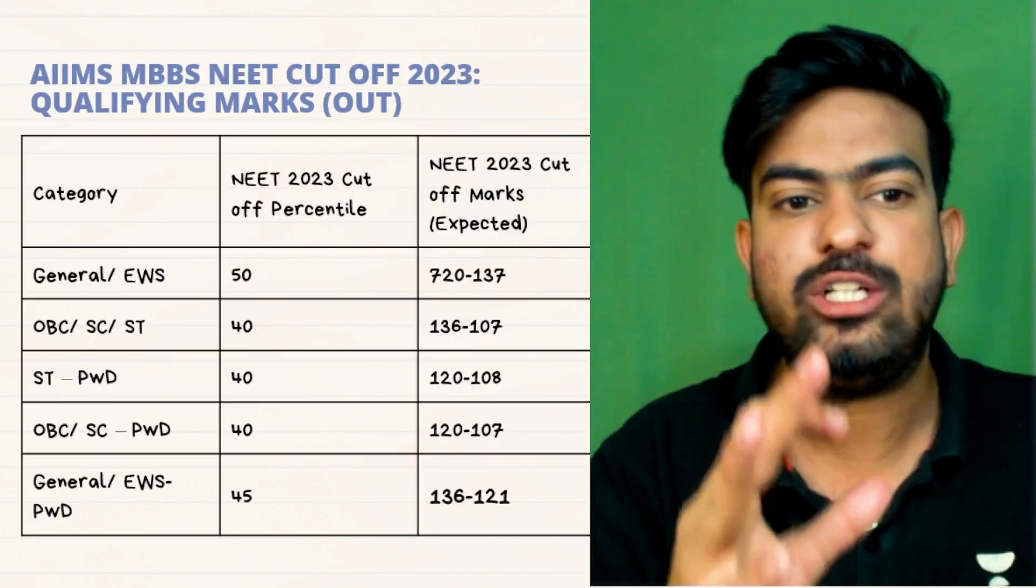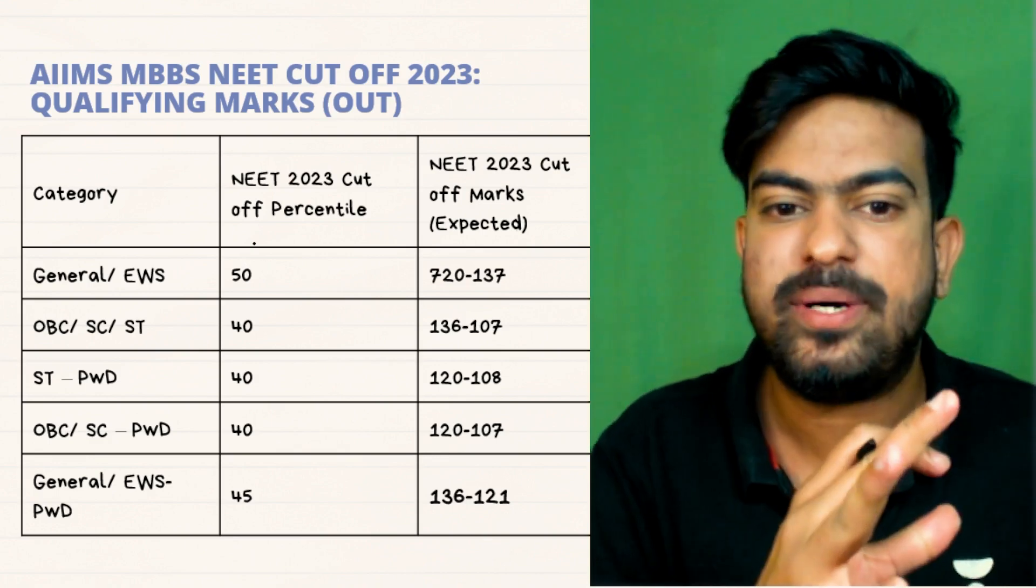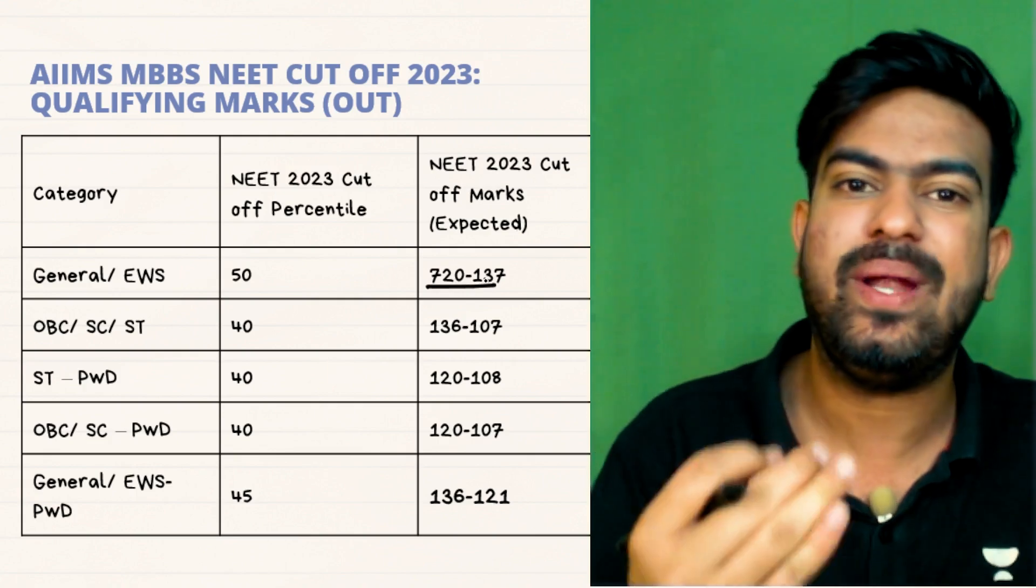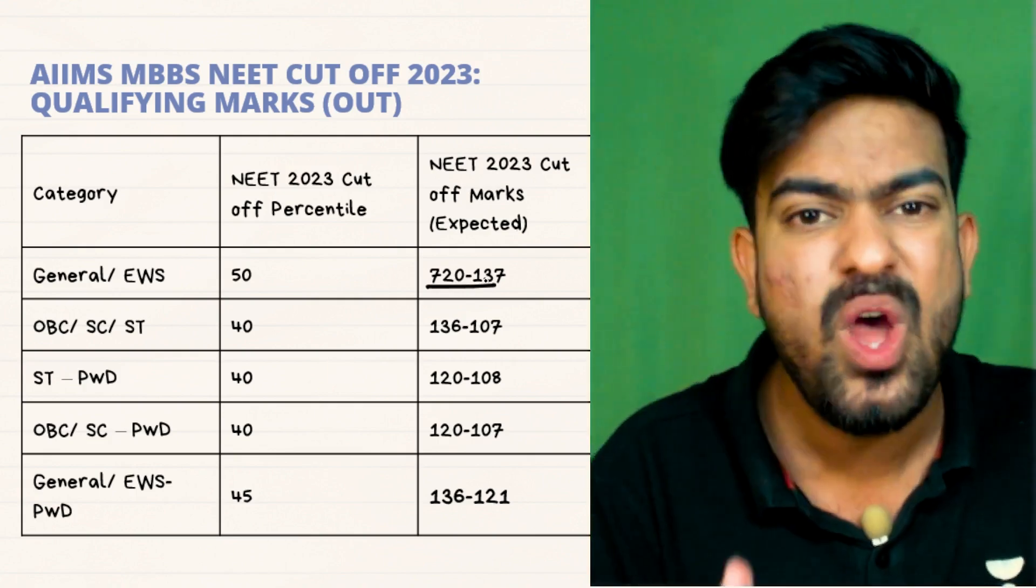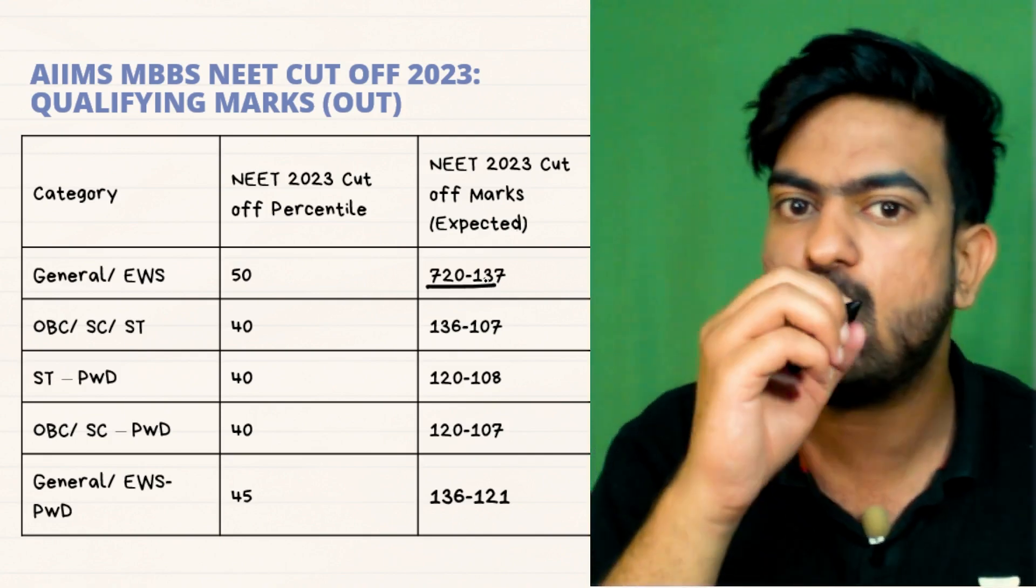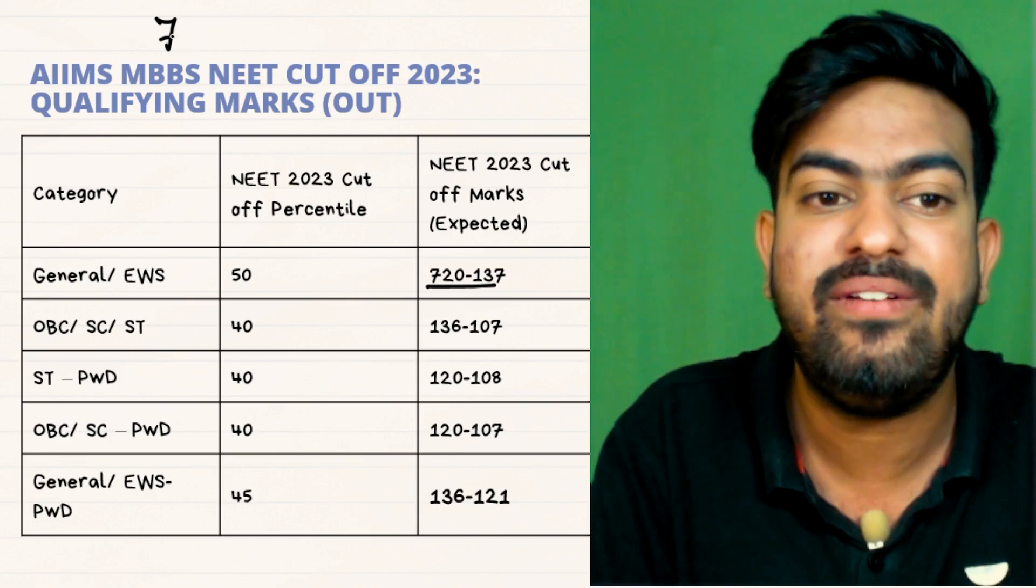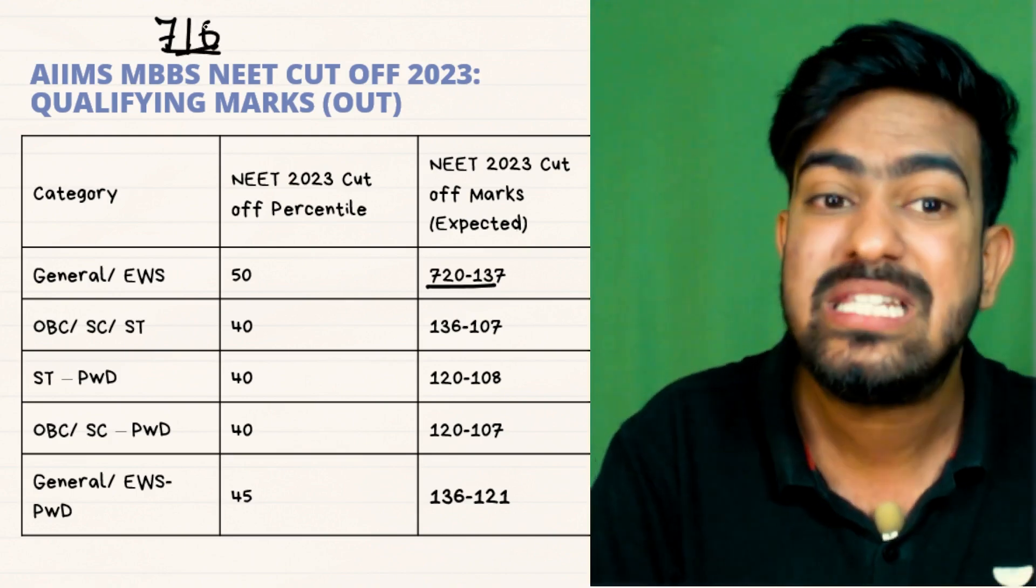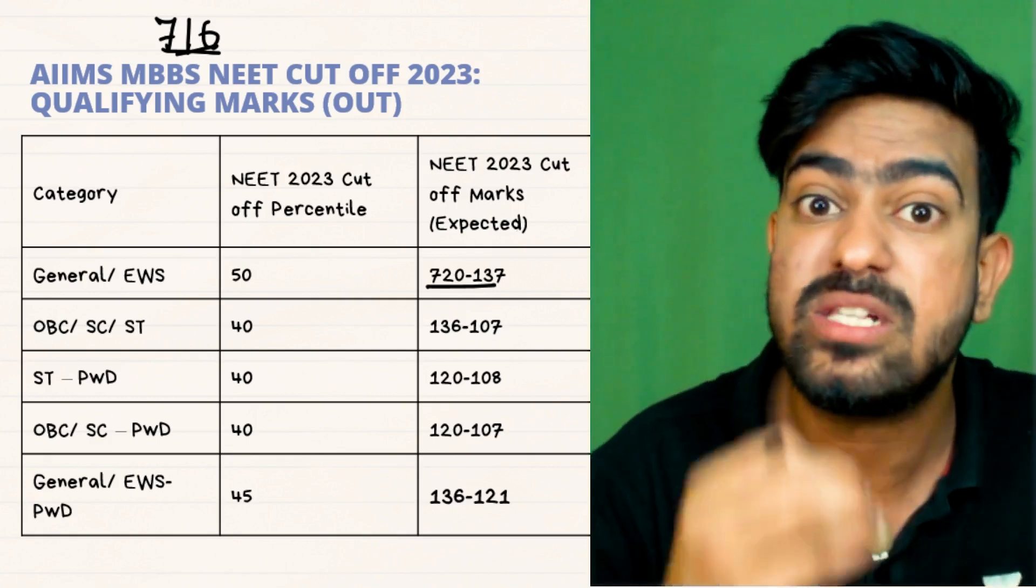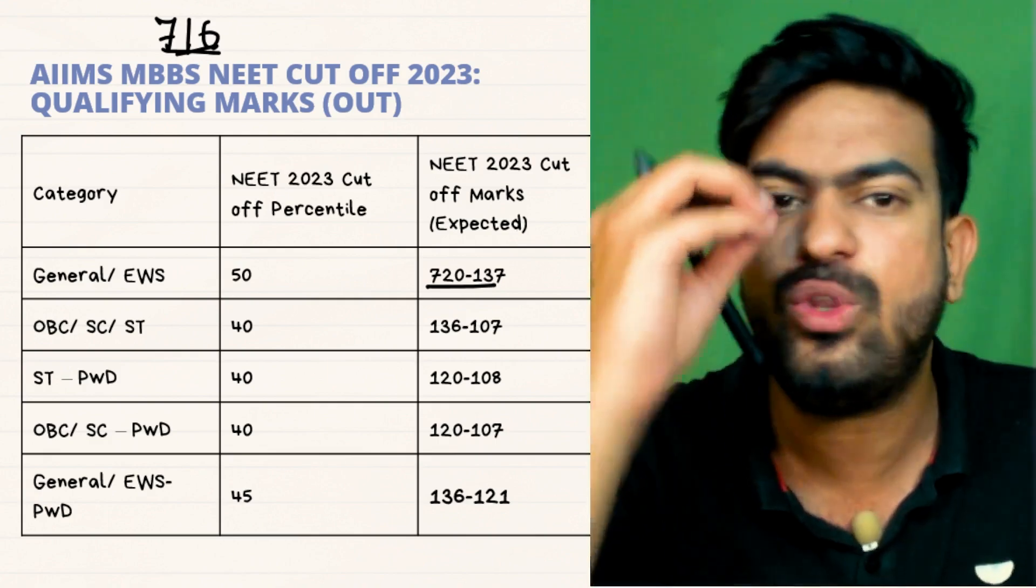Next, what is the normal cutoff? So normal cutoff for AIIMS New Delhi is 50 percentile. And 50 percentile lies between 720 to 137 marks, which is kind of for us has no value. Because to get into AIIMS New Delhi at least you have to score 710 marks, yes or no? 710, 715, 716, these are the marks which you have to score to get into AIIMS New Delhi. Below 700, AIIMS Delhi is no chance.